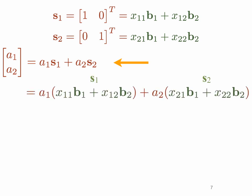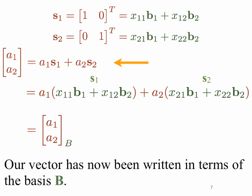So what if we try to rewrite the vector (a1, a2) in terms of the basis b? First we would substitute in S1 as it's written in terms of the basis b, and S2 as it's written in terms of the basis b. Then we might say that (a1, a2) is written in terms of the basis b. We use a subscript to indicate that we've written this vector in terms of a different basis, to distinguish between the two representations.